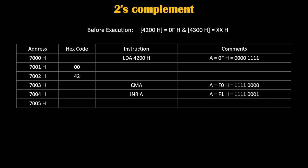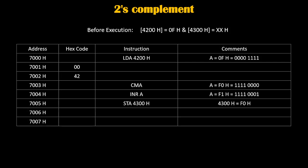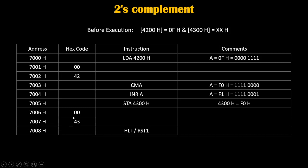Now we need to store this accumulator value at address 4300h, so we write the instruction STA 4300h. STA stands for Store Accumulator, and this instruction stores the accumulator value at memory location 4300h. STA 4300h is a 3-byte instruction, taking 3 memory locations. At address 7005h we write the hex code of STA, and 4300h is written as 00 first, then 43.